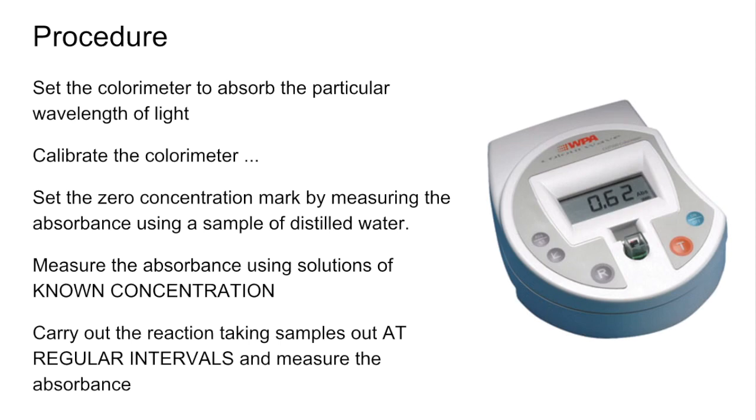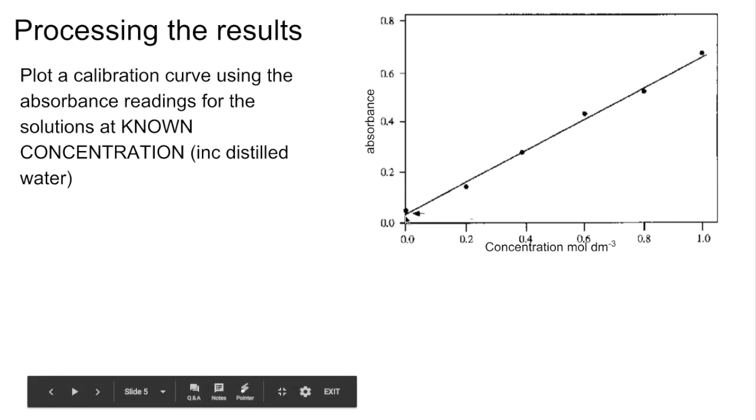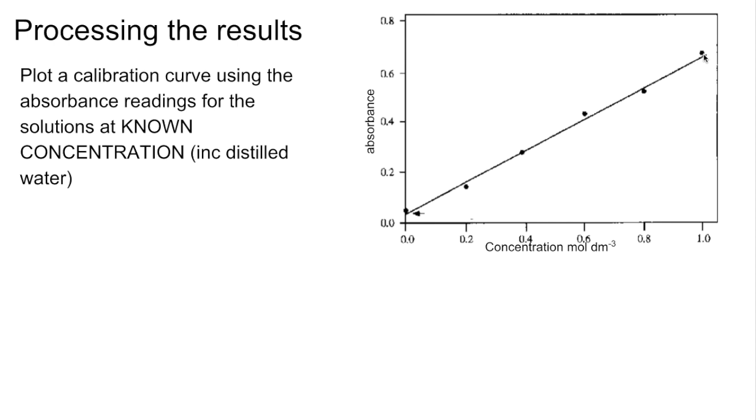Once you've got your results you need to process them. The first thing you do would be to plot a calibration curve using those absorbance readings for the solutions at known concentration, not forgetting the distilled water result. You'd get something like this, so you can see that the concentrations—the known concentrations—have been 0, 0.2, 0.4, and so on up to 1.0 moles per decimeter cubed.